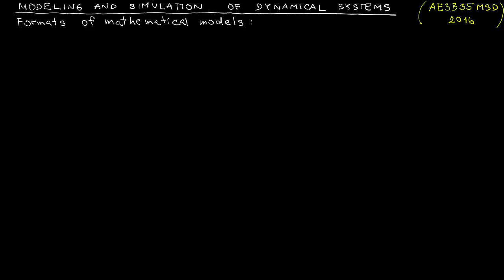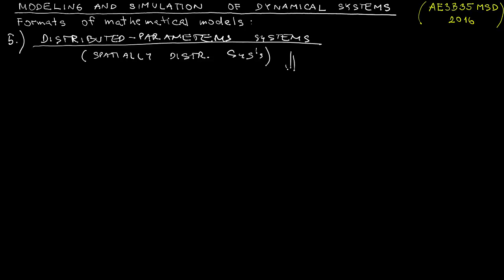We had models of order 1, 2 and n, so perhaps it's high time to start talking about systems of order infinity. In fact, this is not how these models are referred to in engineering literature. Instead, we will refer to them as distributed parameter systems or also spatially distributed systems.